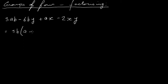We have a minus here. Now we've got 3b, and we need to divide that into 6by. Well, 6 divided by 3 is 2, b divided by b is 1, and we have the y as well. Checking: 3b times a is 3ab - fine. 3b times 2y: 3 times 2 is 6, b times y is by - fine. Plus times minus is minus. So we've factorized this part of the expression using the common factor method.